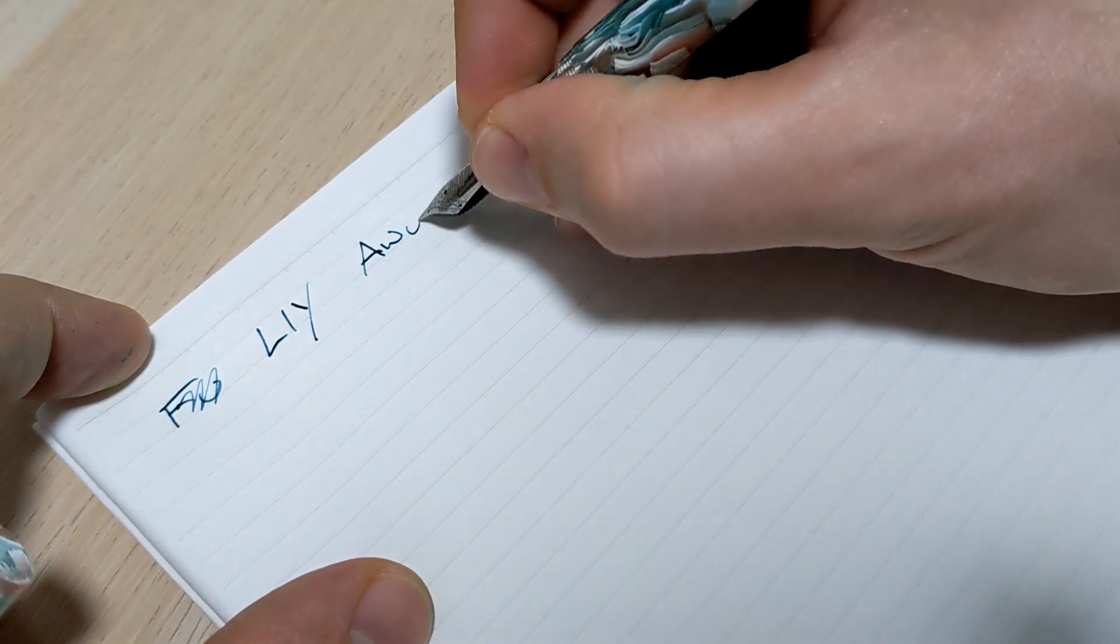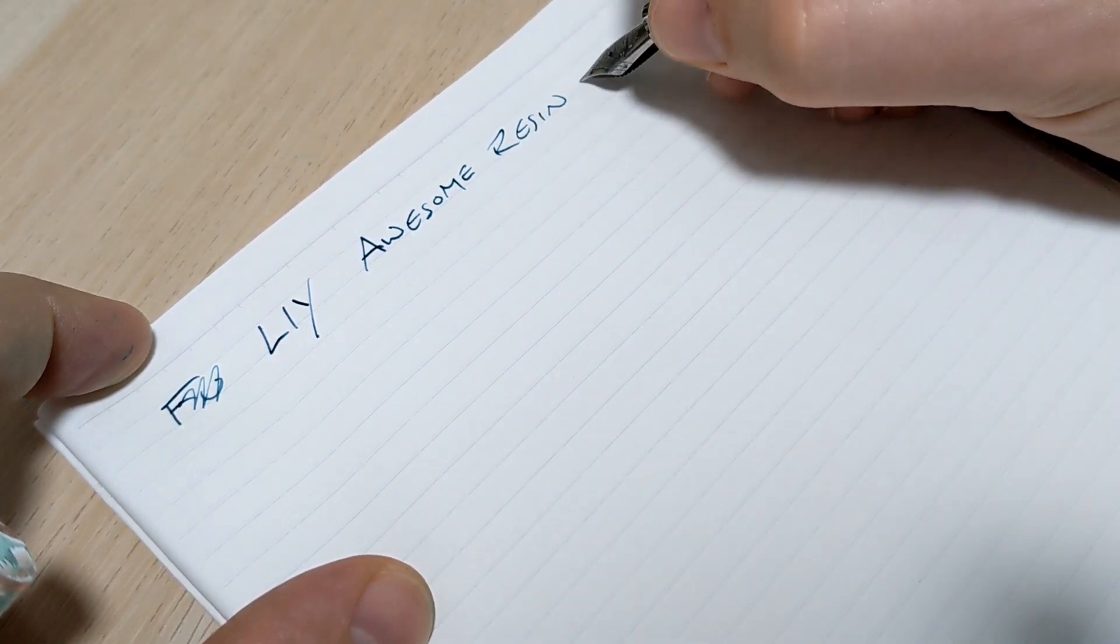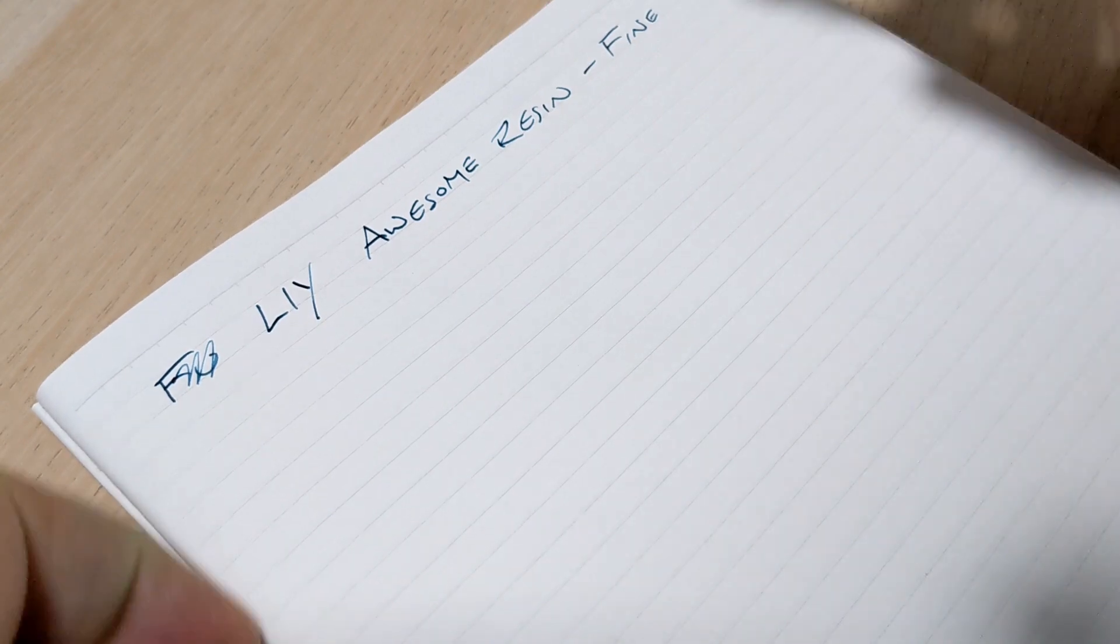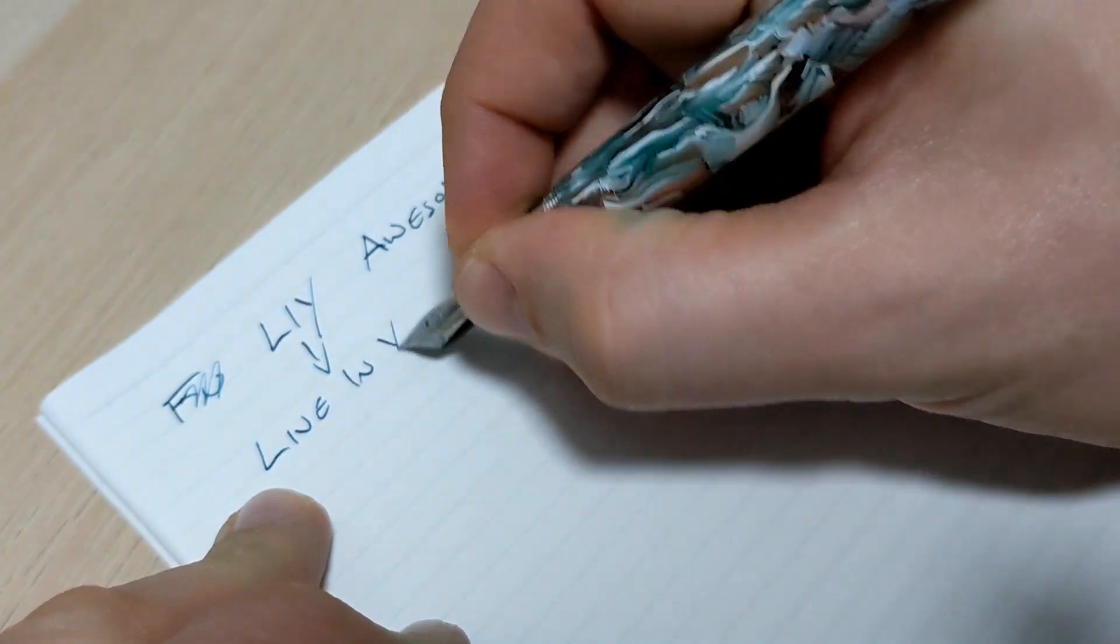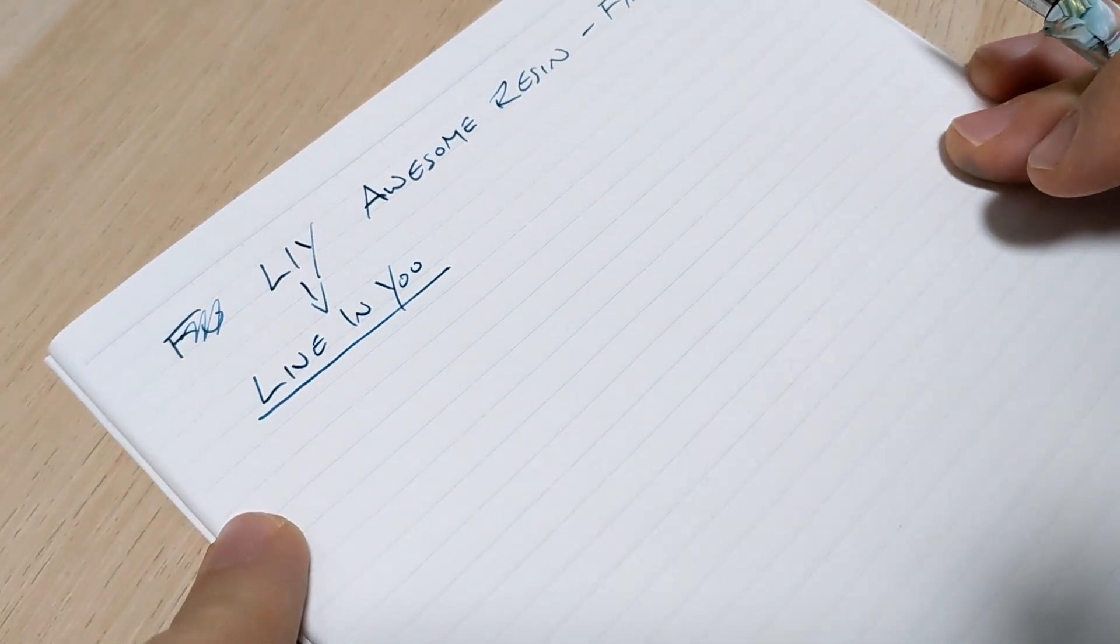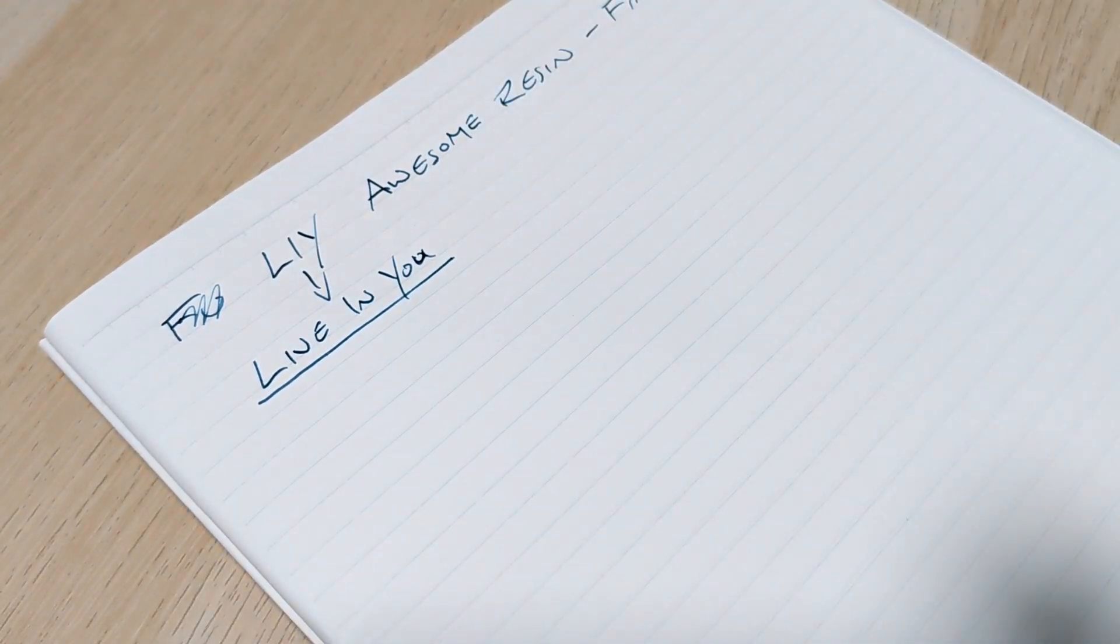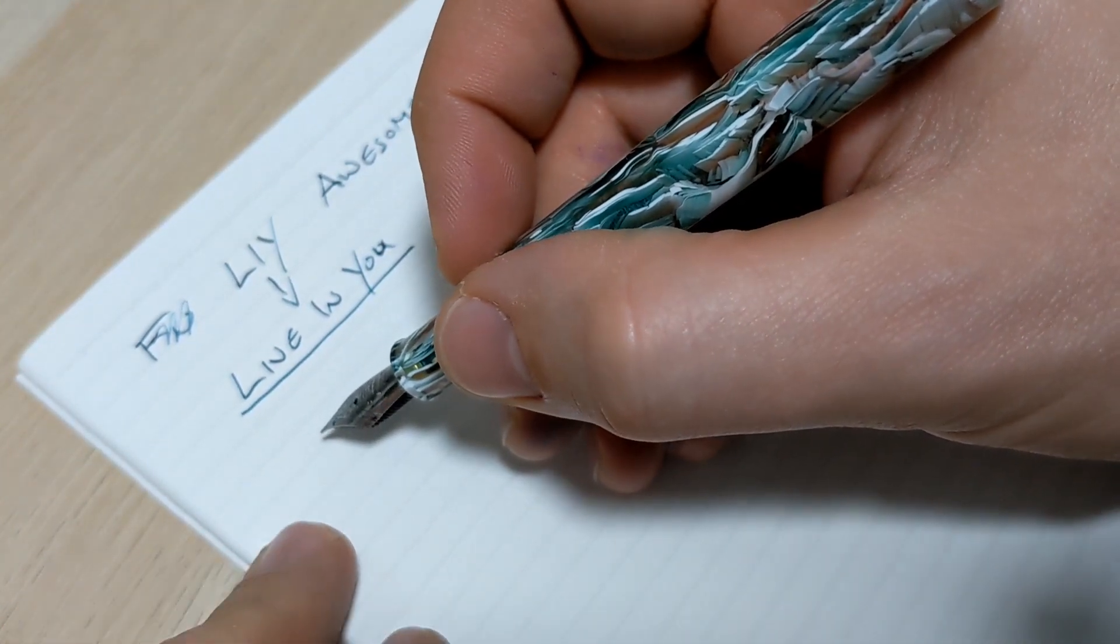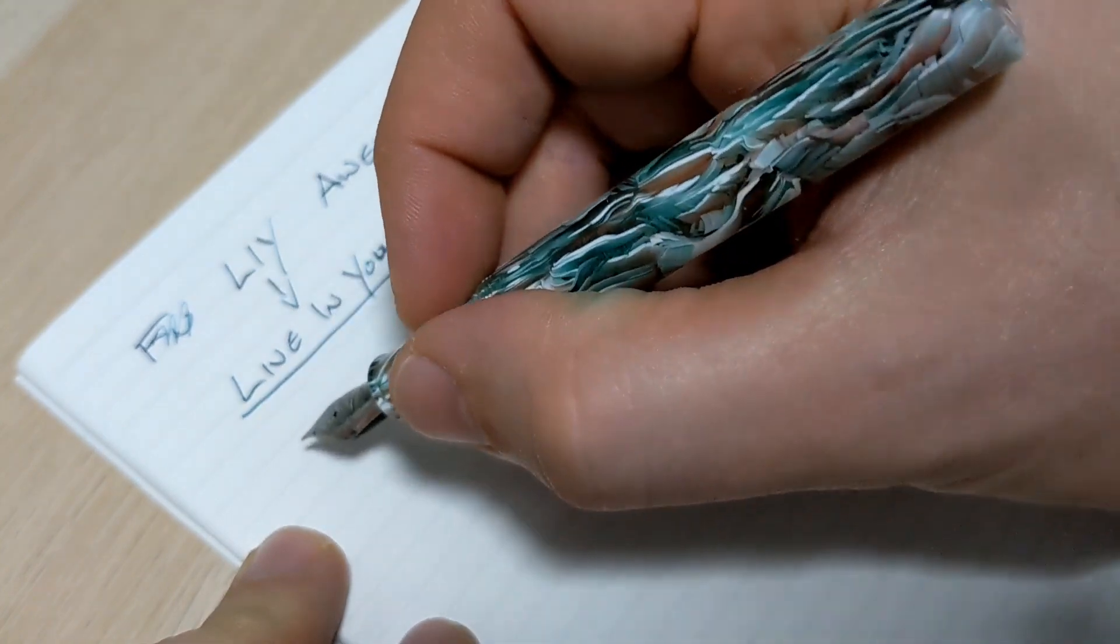So we're looking at the Live In You with many different names, this is the awesome resin in the fine Schmidt nib. For the writing sample, I thought I'd give you more information. This stands for Live In You, but I got in touch with the lady on Etsy - you can also buy it on eBay - just to know what does that really mean, what does Live In You mean. I kind of thought maybe something within you gets to come out, and I was sort of right on that.